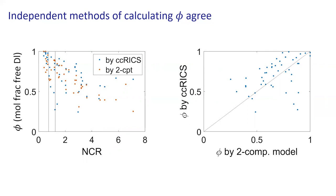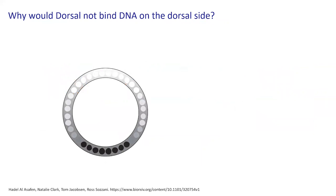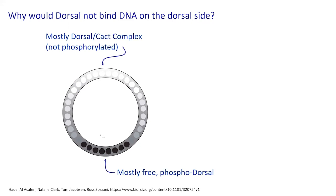To finish up and land this RICS discussion: remember that dorsal is bound to the DNA on the ventral side, but on the dorsal side it's in the nucleus and we can measure it, yet it's not binding DNA. Dorsal is a transcription factor, so why does it bind DNA on the ventral side but not the dorsal side? On the ventral side you have free dorsal binding DNA, but on the dorsal side most of it is dorsal-cactus complex. So we're measuring dorsal in the nucleus on the dorsal side that can't bind DNA — it's probably dorsal-cactus complex.